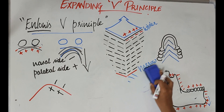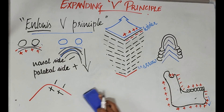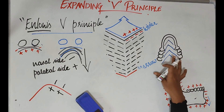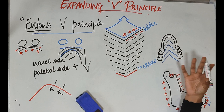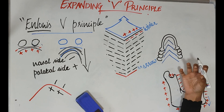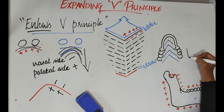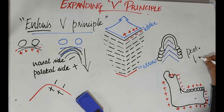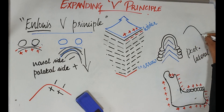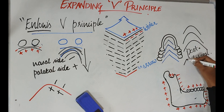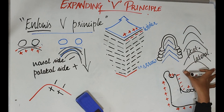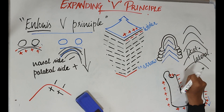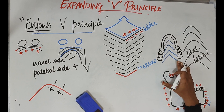The next example is the mandible. Viewing the mandible from the top, the growth of the condyle and the body of the mandible and ramus causes expansion of the mandible in a posterior and lateral direction. From its initial position, the mandible expands and grows posteriorly and laterally, moving from the narrow end of the V toward the wider end. This demonstrates the expanding V principle in the mandible.